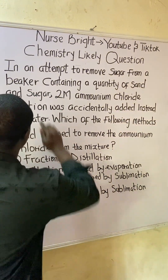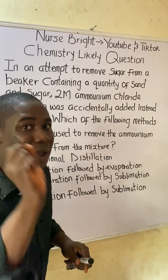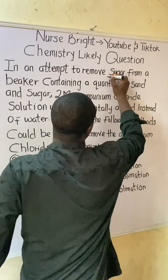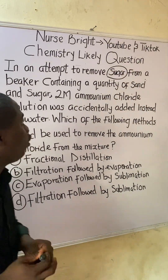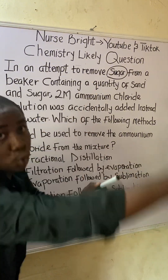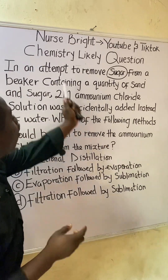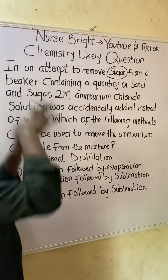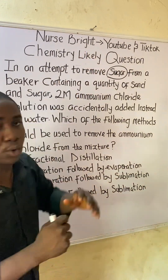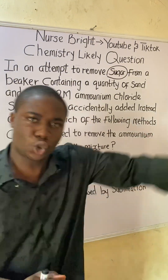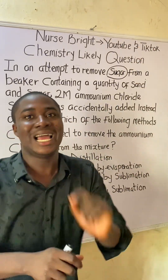The question says: in an attempt to remove sugar — take note of that substance, which is sugar — from a beaker. They told us that we are trying to remove sugar, and this sugar is inside a beaker containing a quantity of sand and sugar. So initially, we are trying to remove sugar from a beaker containing sugar and sand.